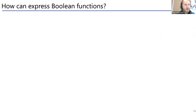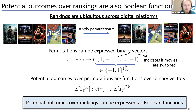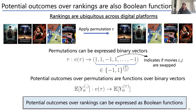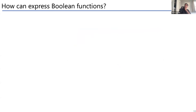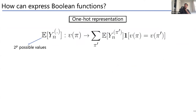[Q&A] A suggestion to use group theory — where each swap is a transposition and each permutation is an element of the symmetry group on n elements — to make the mapping one-to-one. The speaker acknowledges permutations are naturally represented as groups but doesn't see how to convert that into a statistical algorithm, inviting further discussion.